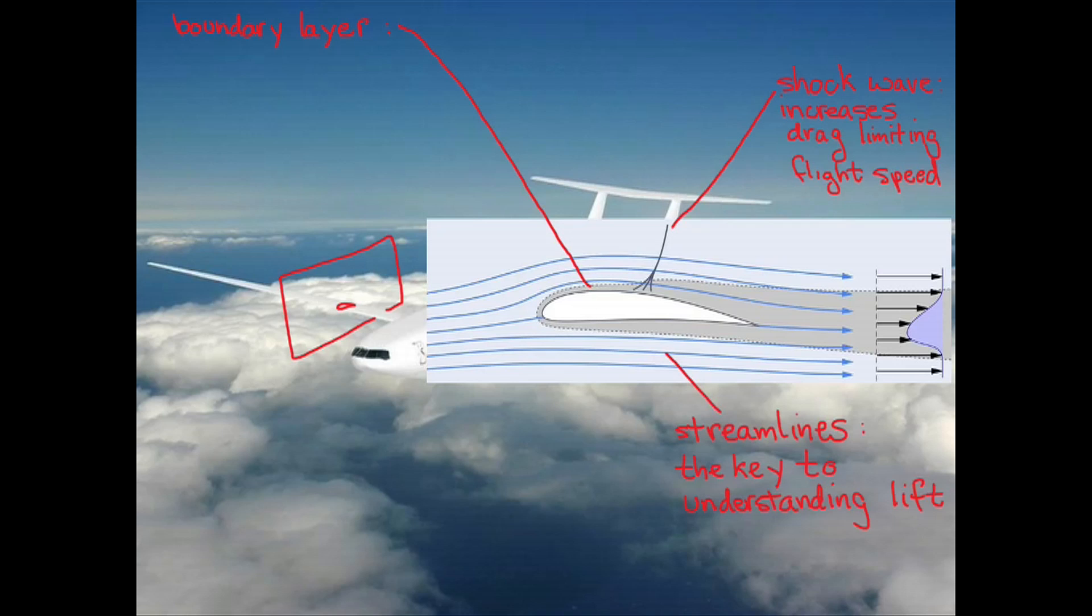Also in this image is the boundary layer. The boundary layer region is where friction forces act, and those friction forces cause a significant amount of the drag on an airplane.